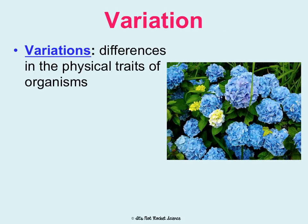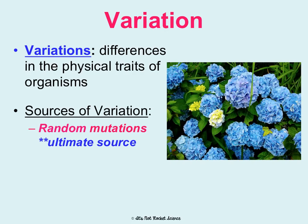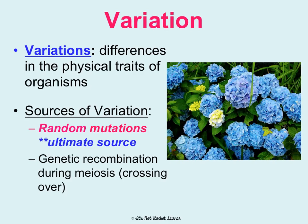Then within those organisms, there's variation — differences in the physical traits of the organisms, as you can see in these flowers. That variation comes from random mutations, which are the ultimate source. It also comes from genetic recombination during meiosis — crossing over during prophase 1 can create new variations and combinations of genes. It can also come from migration and gene flow: moving somewhere new and then reproducing with the organisms there introduces new genes and creates new combinations as well.